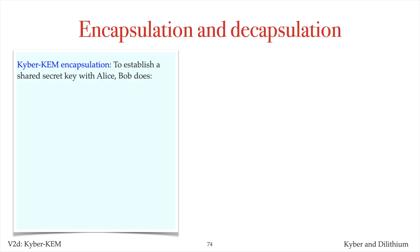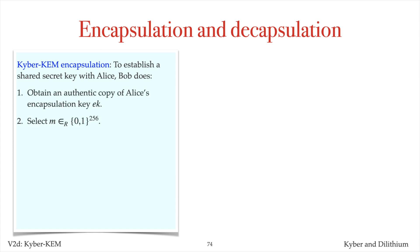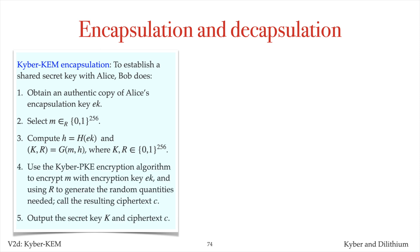To establish a shared secret key with Alice, Bob selects a random bit string m of bit length 256. He computes the hash h of the encapsulation key, and hashes m and h to get bit strings k and r, each of bit length 256. Bob uses the Kyber PKE encryption algorithm to encrypt m with encryption key ek, yielding ciphertext c, using the bit string r to generate the random quantities needed for encryption.